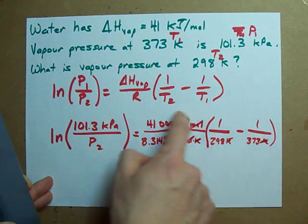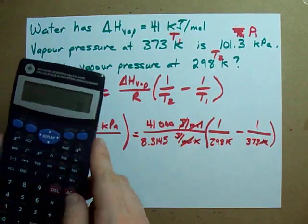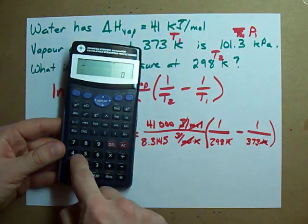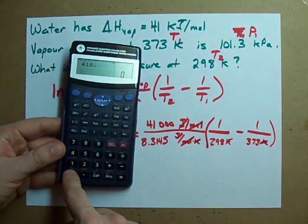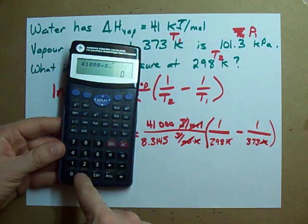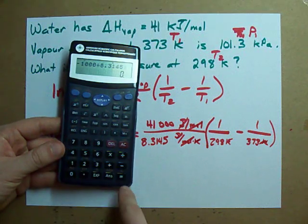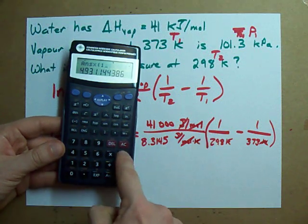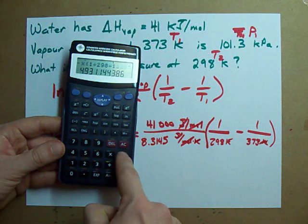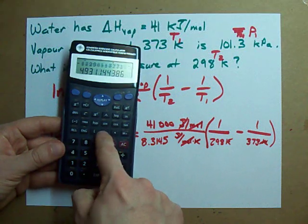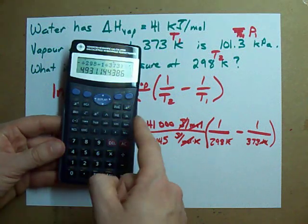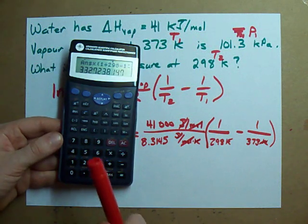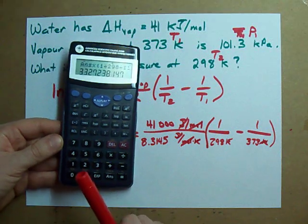Now, we've got to do this business over here. So, with the calculator, can you guys see what I'm typing? Yeah, there we go. 41,000 divided by 8.3145 times, and then in brackets, I'm going to go 1 divided by 298 minus 1 divided by 373. Okay, your calculator should do order of operations for you, and I get 3.3272.